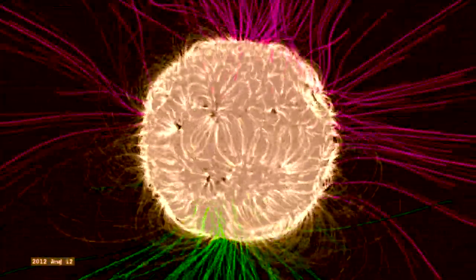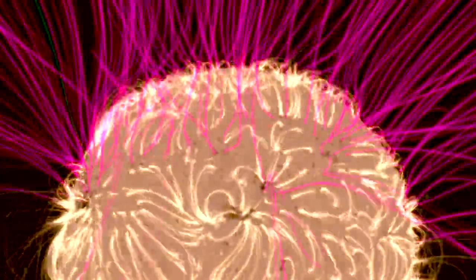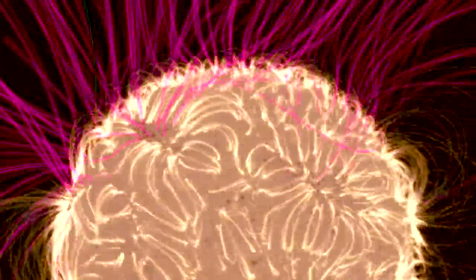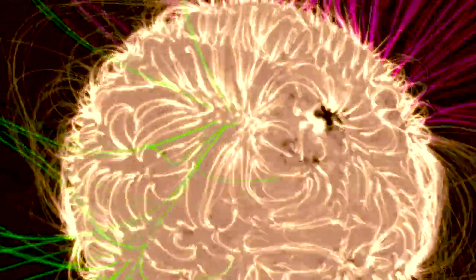And again, models are the one way we can do this because they allow us to model where the field lines are, how they're going to interact with each other when the sun rotates, and then how that causes solar storms like coronal mass ejections and solar flares.